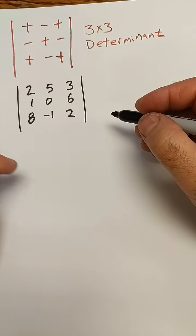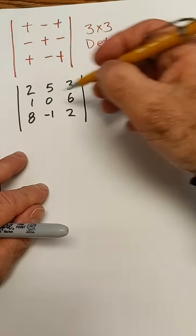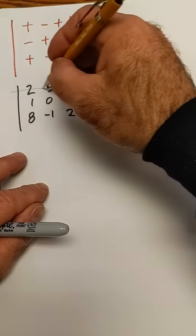How to find the determinant in a 3x3 matrix. You're going to use this pattern for positive negatives. You could do it with any row or column. I'm going to do this first row right here.